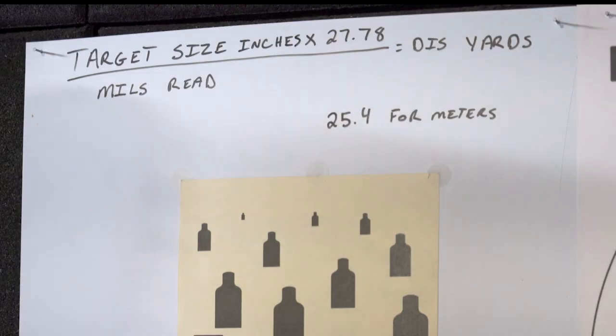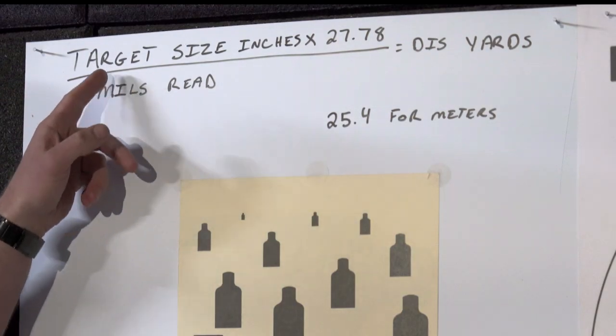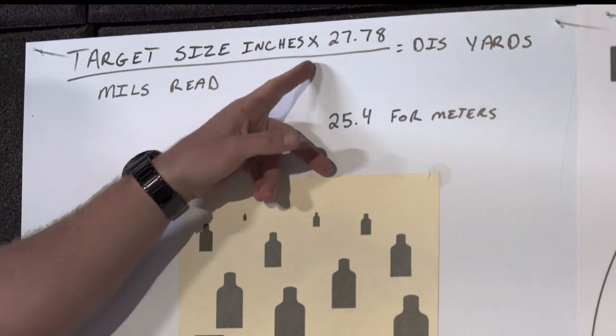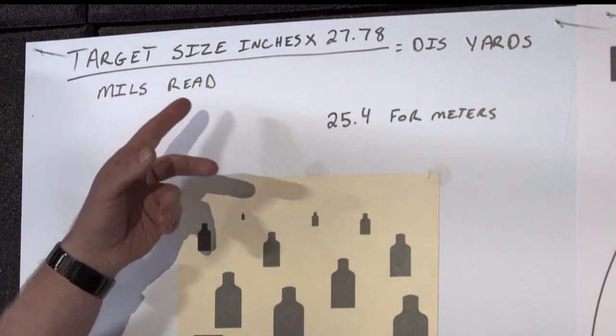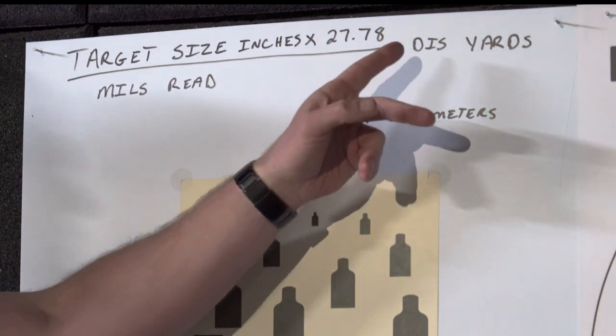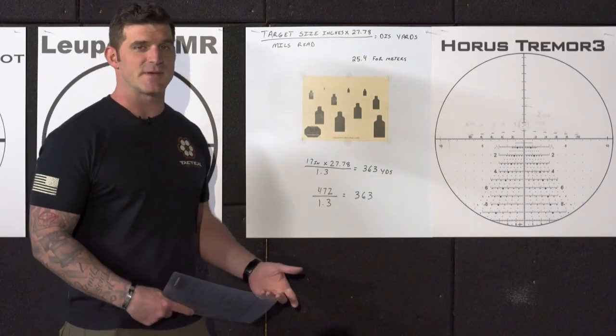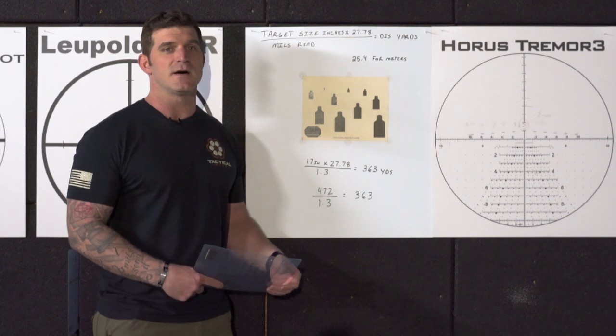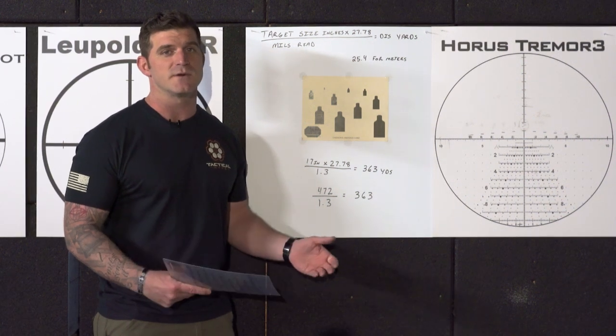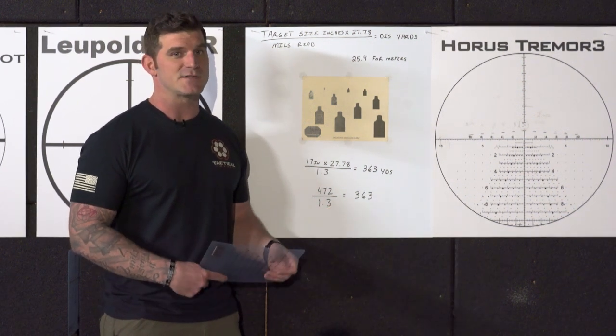For this you're going to need a formula. So up at the top here we have our target size in inches times 27.78 divided by mills read equals distance to target in yards. How are we going to apply this? Well first it's estimation. So we have to estimate our target size, whether we're going to use width or height, in inches.